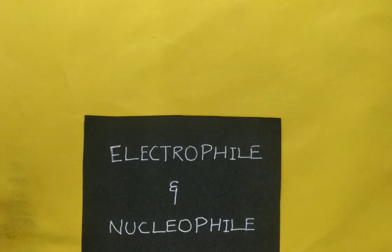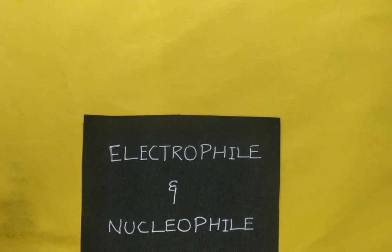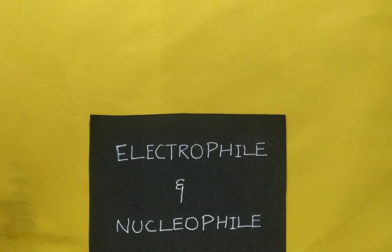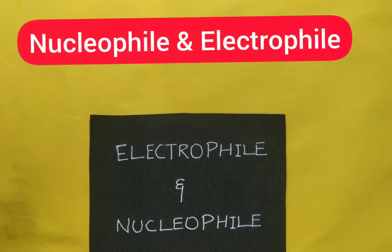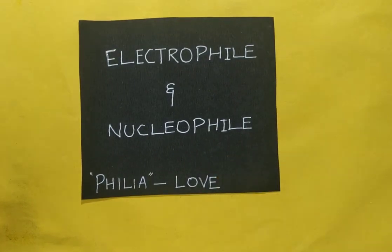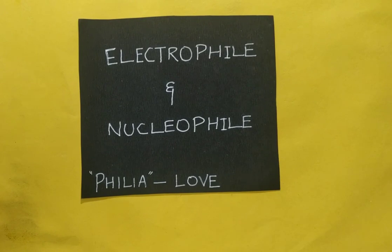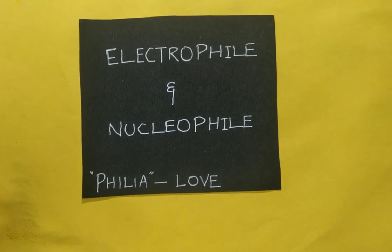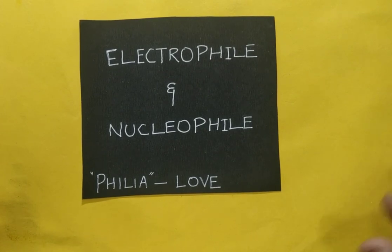Welcome to our channel, dear students. Today we are going to talk about a very important topic in organic chemistry: how to identify electrophile and nucleophile. The word 'phile' comes from the Greek word 'philia', which means love, attraction, or friendship. Let us discuss what is a nucleophile and what is an electrophile.